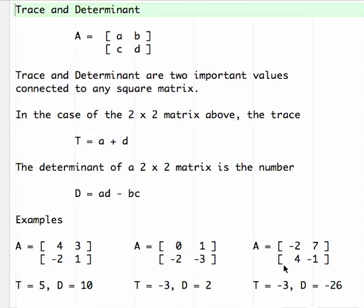Third, trace is negative 3 again, but the determinant is 2 minus 28, or negative 26.